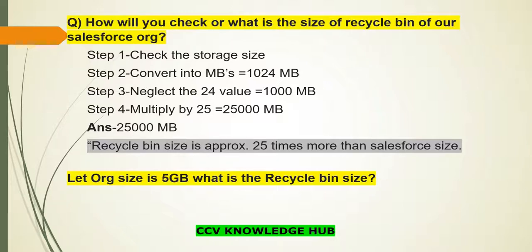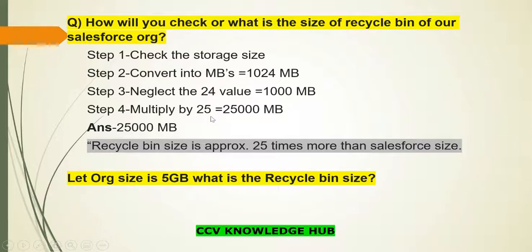Let's take another example: my org size is 5 GB. Step one: storage size is 5 GB. Step two: convert to MB — 1000 × 5 = 5000 MB (using the rounded figure). Step four: 5000 MB × 25 = 1,25,000 MB. So your recycle bin size would be 1,25,000 MB.